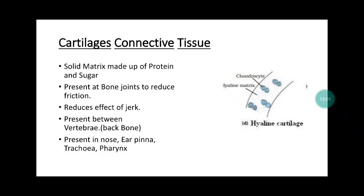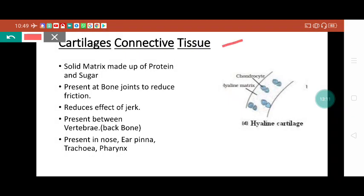Next one is called cartilage. If you touch your ear pinna, that is also made of cartilage. If you touch your nose and move it, that is also made of cartilage. Even between the vertebral column, cartilage discs are present. The role of cartilage is to give specific movement, flexibility, and strength, and they reduce the effect of jerk and shock. They are present between bones and reduce friction between bones.